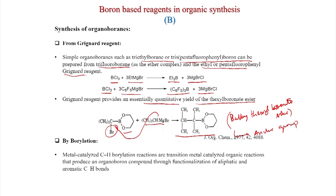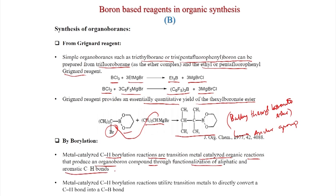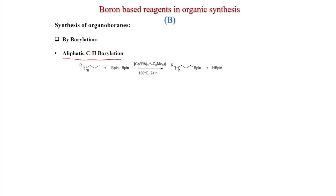By borylation: metal-catalyzed C-H borylation reactions are transition metal-catalyzed organic reactions that produce an organoboron compound through functionalization of aliphatic and aromatic C-H bonds. Metal-catalyzed C-H borylation reactions utilize transition metals to convert C-H bonds into C-B bonds. This is a very important reaction. Aliphatic C-H bonds can also be activated and borylated.